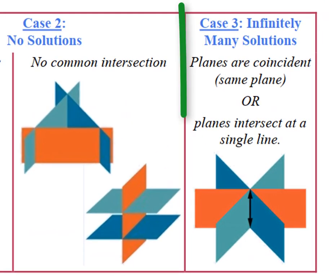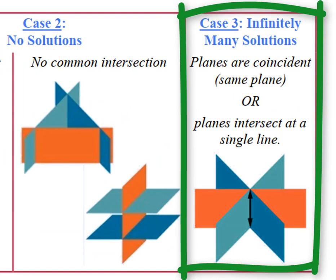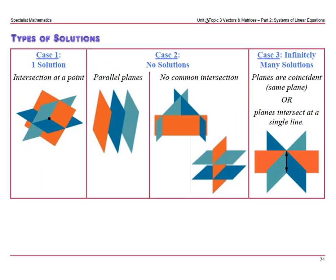Now our third case is infinitely many solutions. So the planes are coincident, meaning they're the same plane, or the planes intersect at a single line. So there's two possibilities for infinitely many solutions. Now I've only shown the planes intersecting at a single line and you can see that quite well. For planes being the same, they would be lying on top of each other. Now the next three videos are going to look at each of these cases.